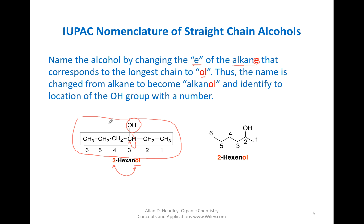Please do not forget your hyphens and commas — notice on the quiz some of you missed that. We will be subtracting points on the next quiz and on the exam if you miss those. Here's another molecule: the OH is on carbon number 2. You start numbering at the end closest to the OH, so this becomes 2-hexanol, because there are six carbons and the OH is on carbon number 2.